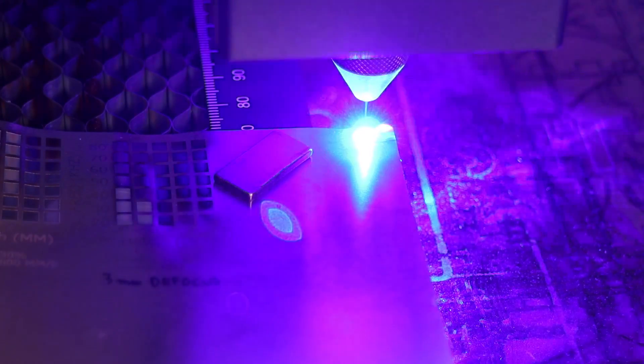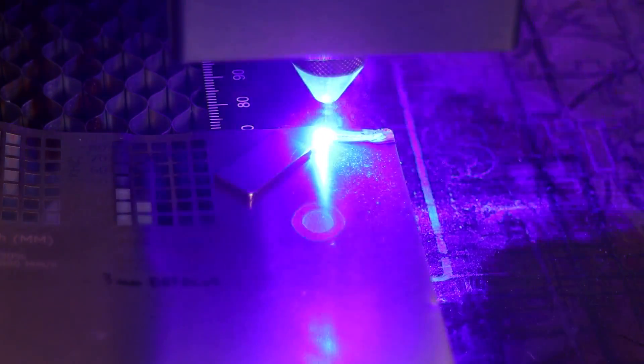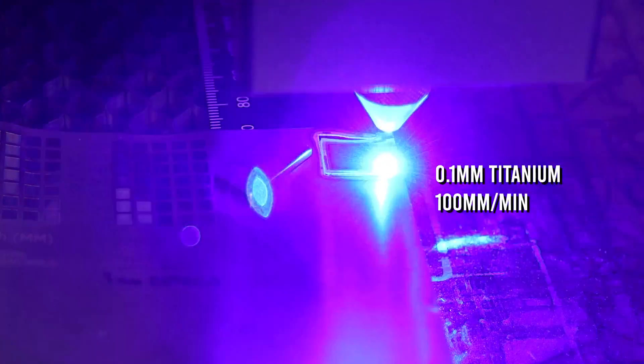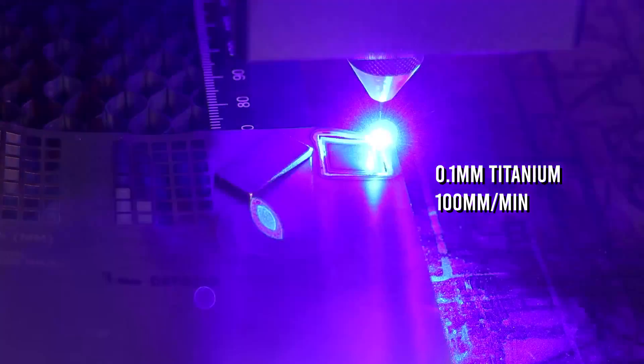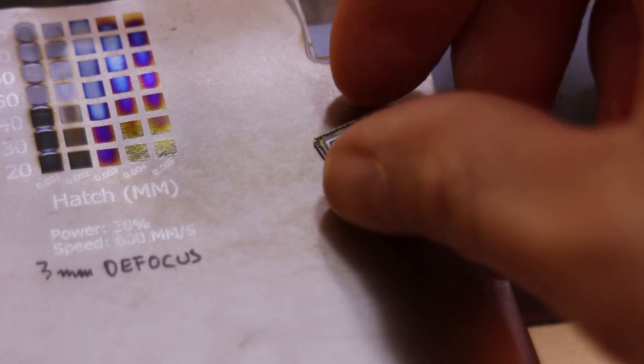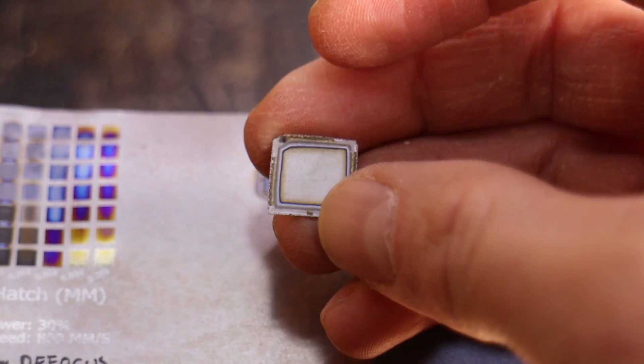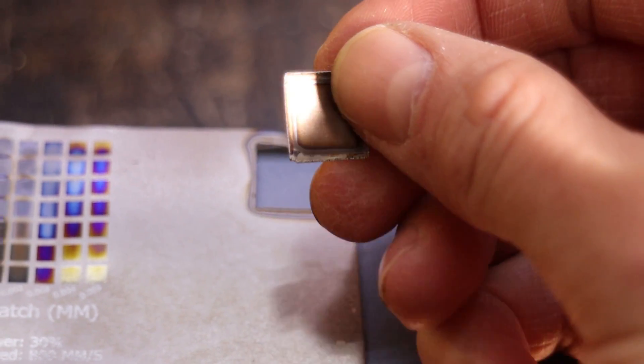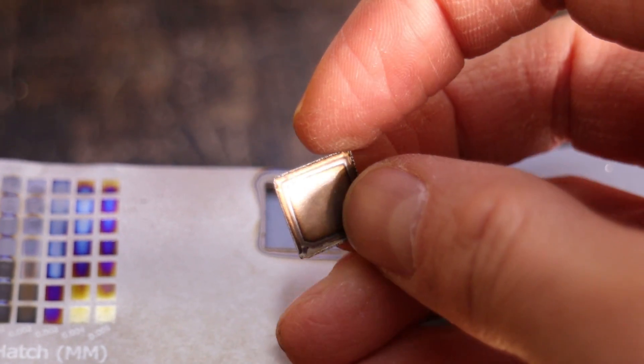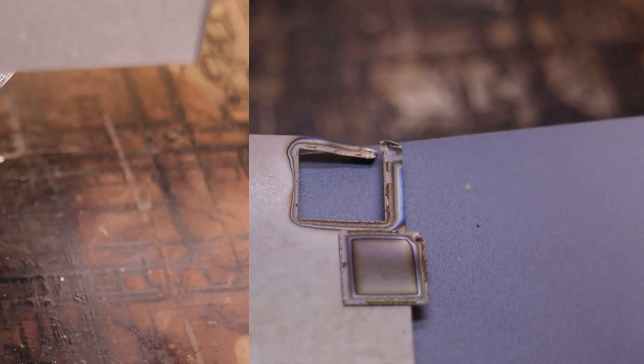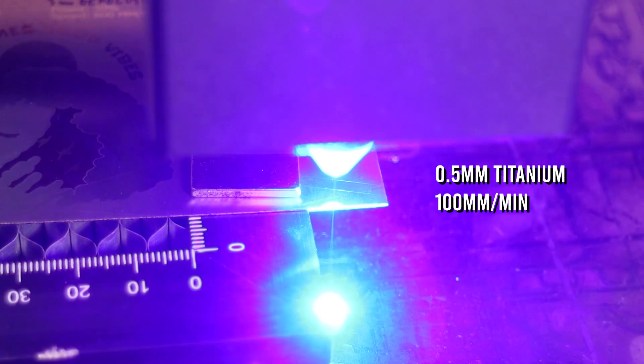I also had some 0.1mm titanium at hand and this machine was able to cut it with ease. For fun, I tried cutting 0.5mm titanium but it didn't work.